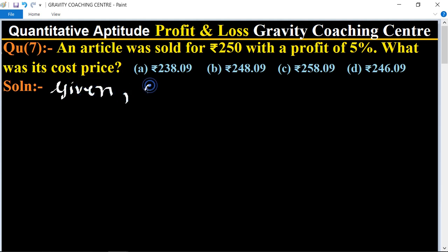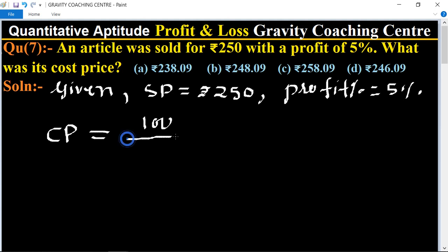In this question, the selling price of the article is given as rupees 250, and profit percent equals 5%. What was its cost price? We know that the formula of cost price equals 100 divided by 100 plus profit percent, multiplied by selling price.